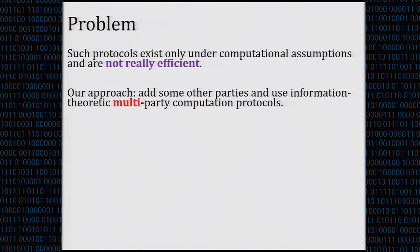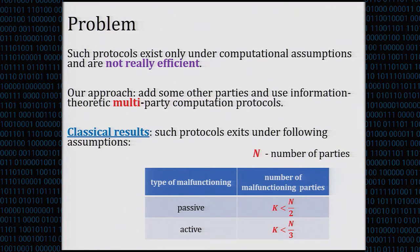What turns out is that there exist much more efficient protocols that are information-theoretically secure — multi-party computation protocols. They need more than two parties, but are much simpler computationally, essentially using only XOR. The classical result is: if N is the number of parties and K is the number of malfunctioning parties tolerated, then for passive adversaries we can tolerate K less than N/2, and for active adversaries we need K less than N/3.